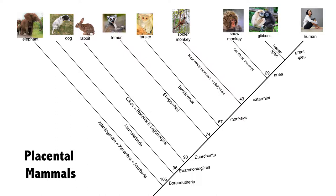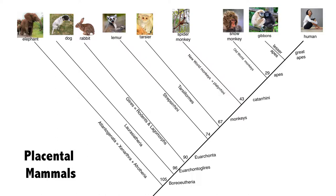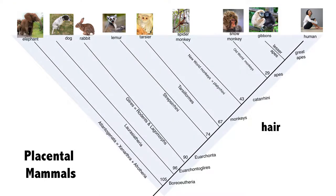Here is a tree of placental mammals. You can see at the very bottom that the common ancestor of elephants and humans was 105 million years ago. And you can see by looking at these pictures that all of those critters that are alive today have hair. My dog Dilly has hair. Rabbits have hair. Lemurs, tarsiers, spider monkeys — everything has hair. If everything in this group has hair, that means the common ancestor of all these things had hair. So everything in that blue triangle has hair — all the dead critters, all of our ancestors.